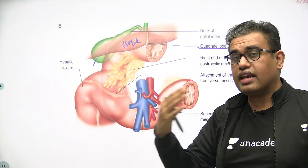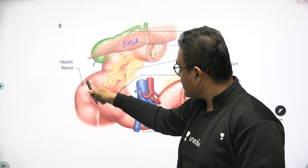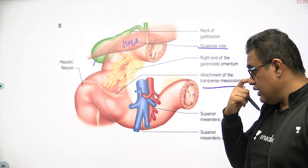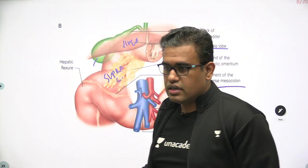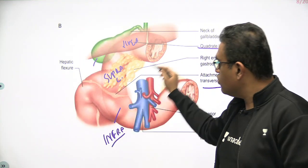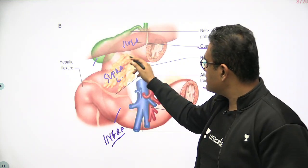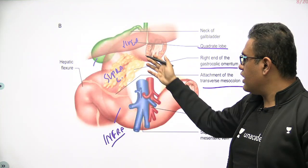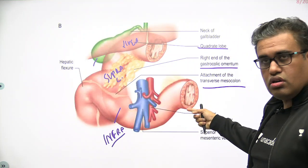Anterior to the second part duodenum is the root of the transverse mesocolon — you can see this faint line here. The transverse mesocolon is attached here. The duodenum above this attachment lies in the supracolic compartment, and the part below lies in the infracolic compartment. So the whole duodenum lies in both the supra- and infracolic compartments. Parts of the gastrocolic omentum — a peritoneal fold between the stomach and colon — will also be covering the duodenum.